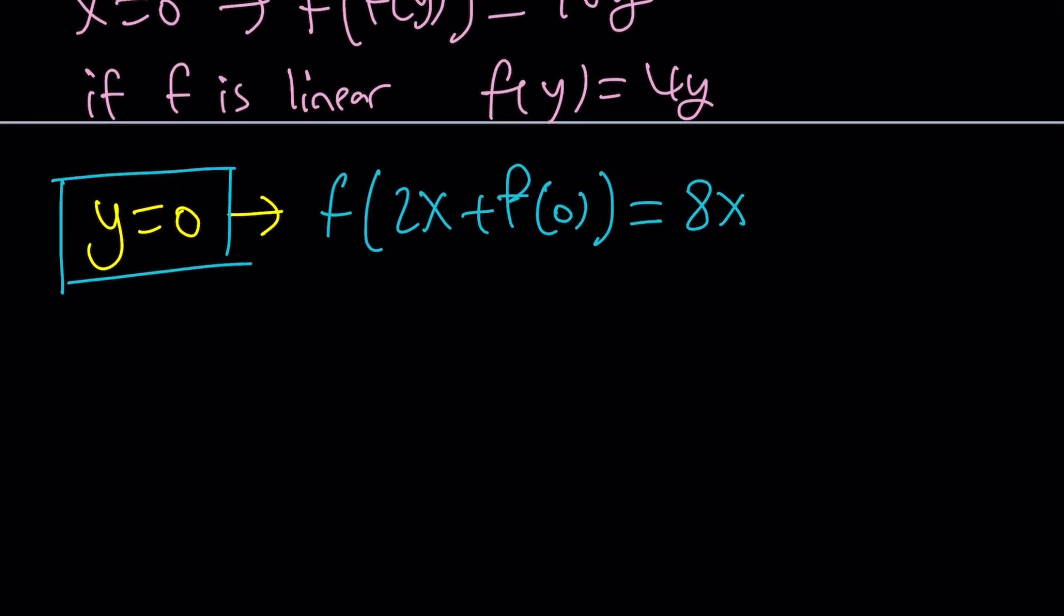So, it's going to be f of 2x plus f of 0 equals 8x. x is going to stay the same because I'm replacing y with 0. And, of course, this is going to be 0. So, I don't need to write it. Now, how do you find f from here? Because we now have an extra thing called f of 0. But guess what? f of 0 is a constant. So, let's call it c. That makes sense, right? c for constant.